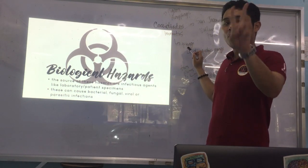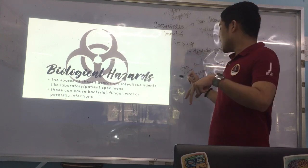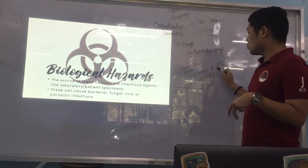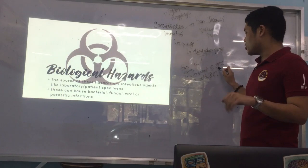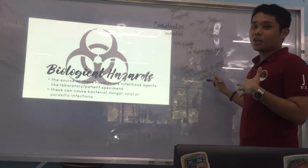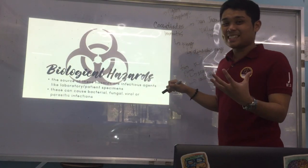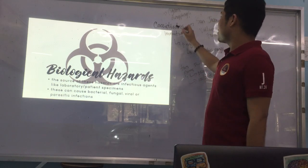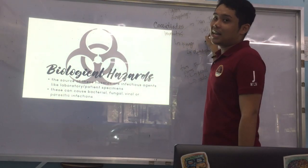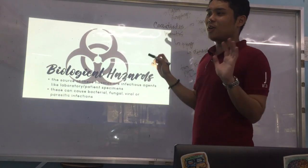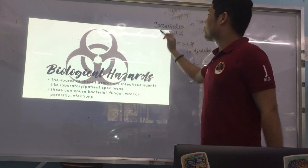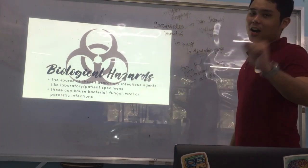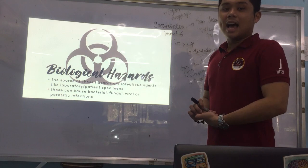Coccidioides immitis is a dimorphic fungus, meaning it exists in both forms — either yeast or mold. Yeast at body temperature, and mold at room temperature. The disease it causes is San Joaquin Valley Fever, and it can be acquired from pigeon droppings. That's your biological hazards summary.